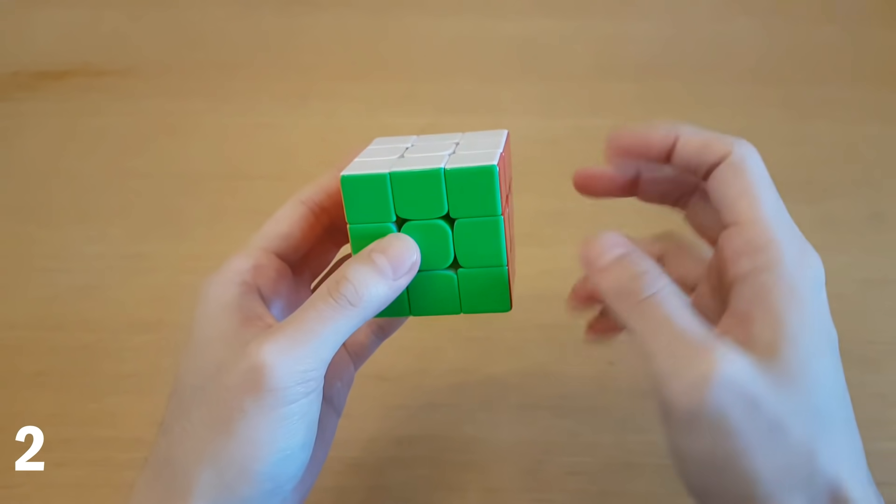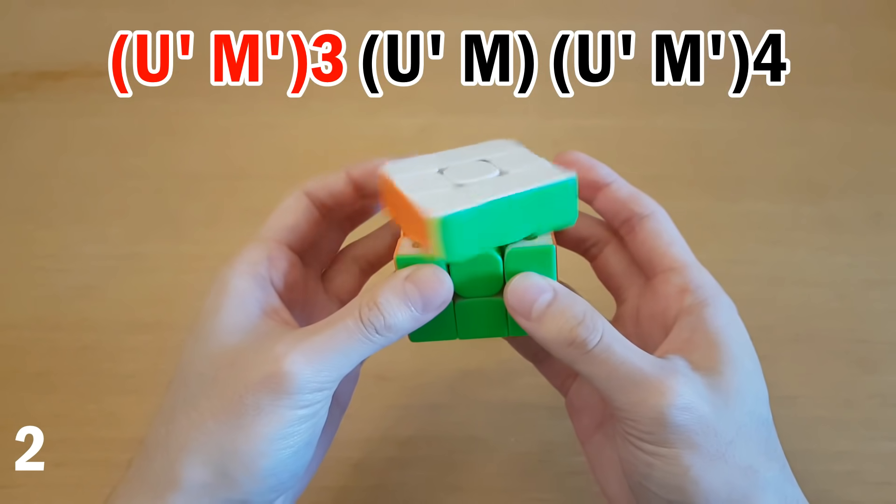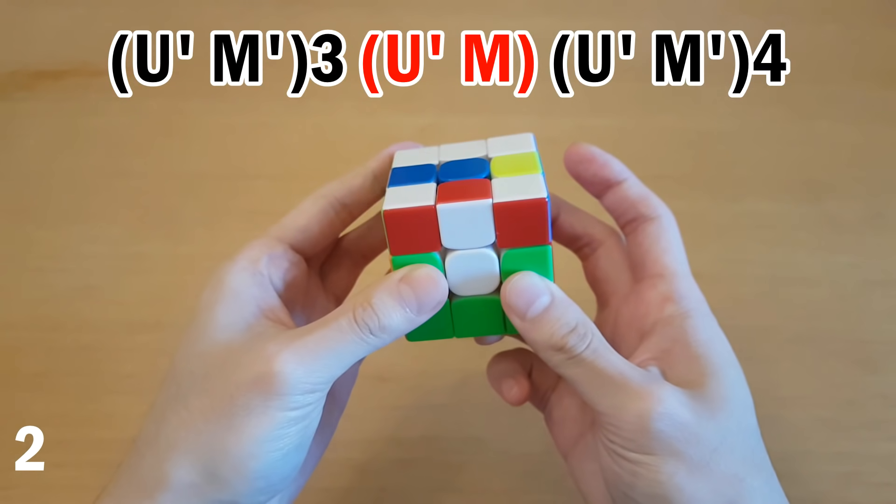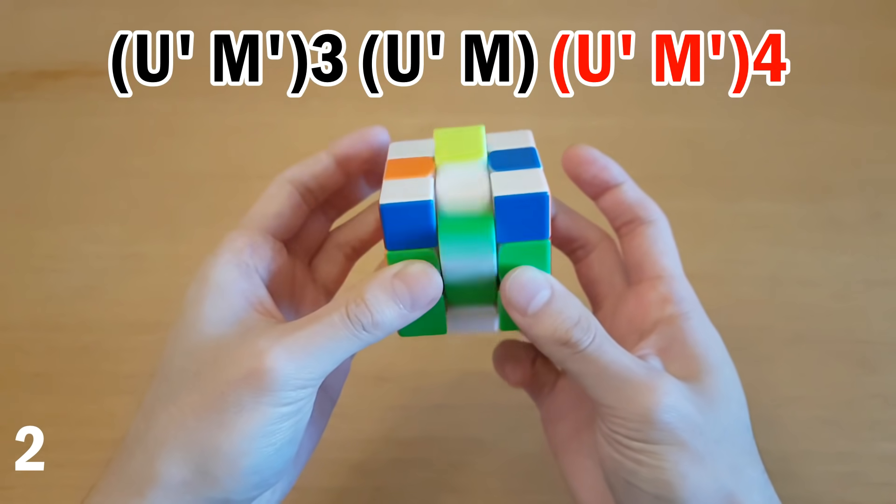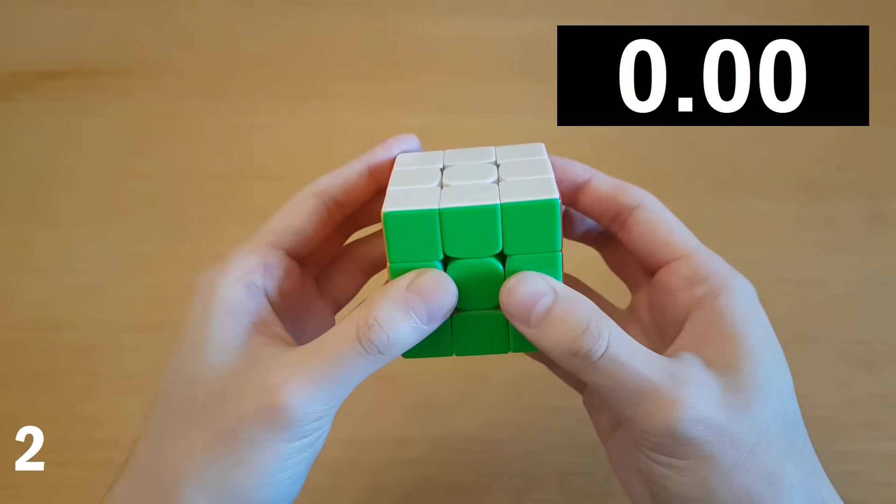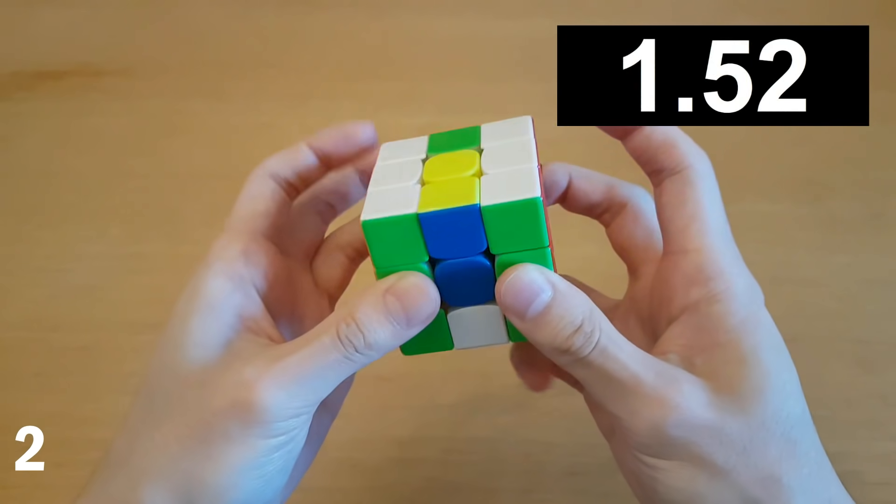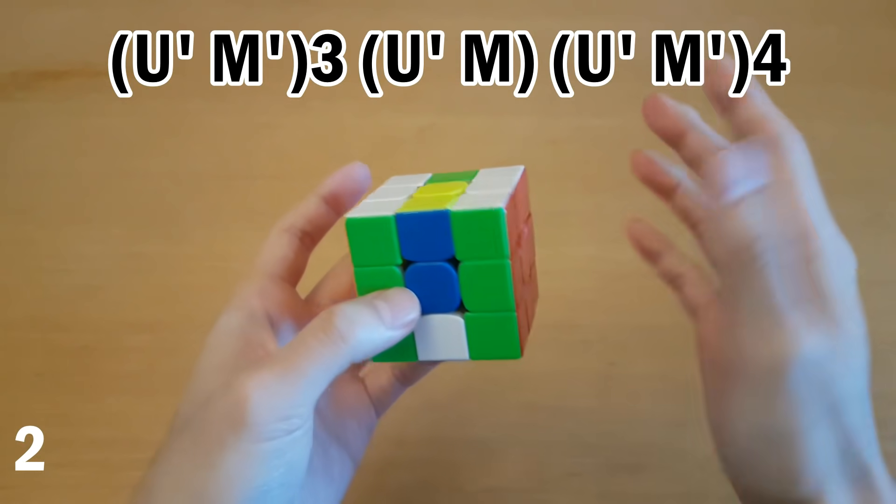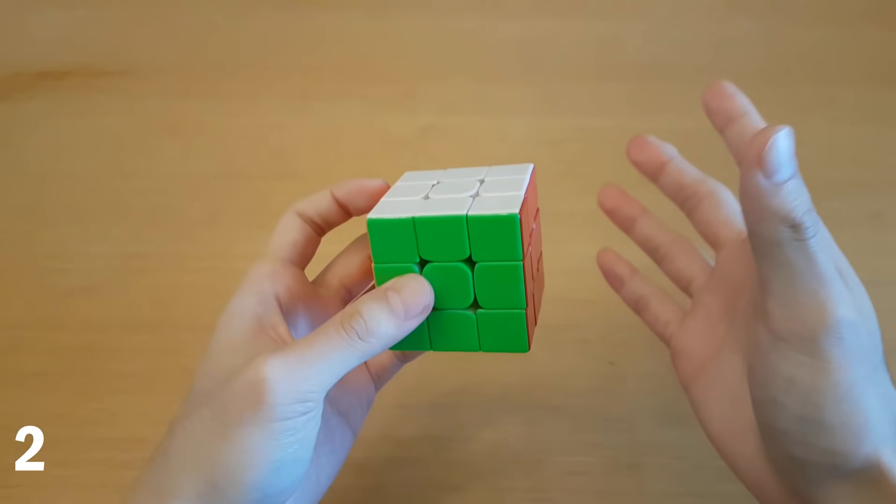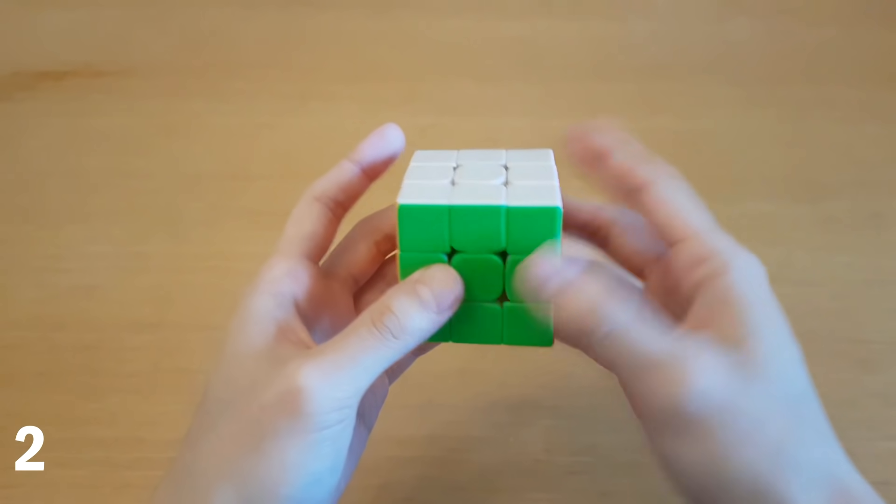Instead, there are two ways you can do this that are faster. I'll start with the easier one, that is like this. Of course, you could also do the U' as U2, it doesn't make a difference. And the other way, which I think is faster, but is harder to do, is like this.